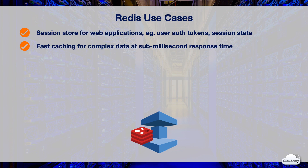Redis is suited for fast in-memory storage of complex data. ElastiCache for Redis can serve frequently requested data at sub-millisecond latency. You can use Redis to store results of complex queries and offload heavy reads from the database.